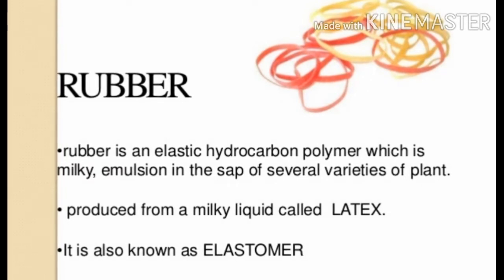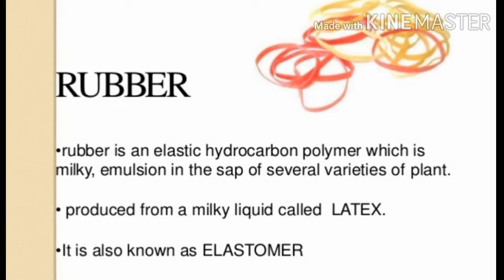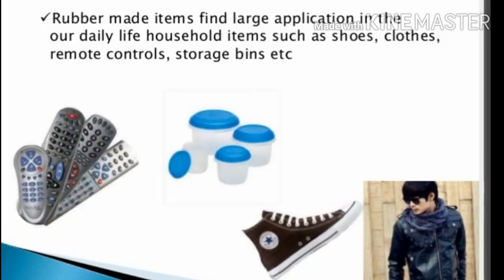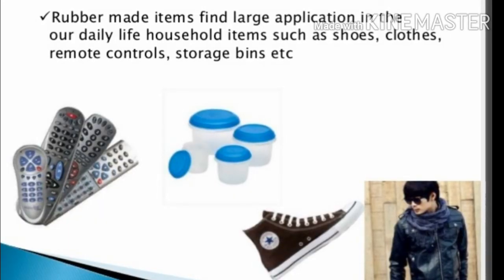Which property does an elastomer show? Elasticity — it will be stretched and then return to its original position and original shape. That means rubber shows the property of elastomers.